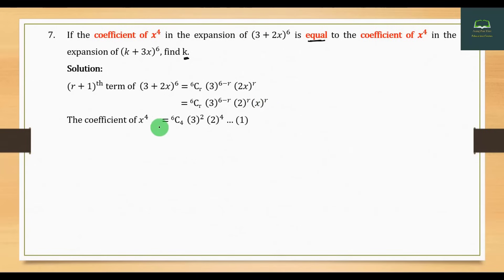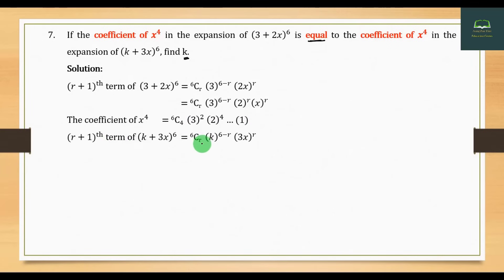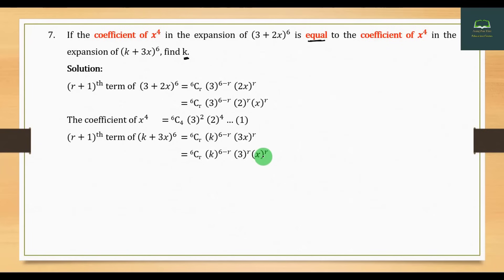The coefficient is given by the formula: 6C4 times 3^(6-4) times 2^4. Using the general term formula, the r-th term is nCr times (first term)^(n-r) times (second term)^r, so T(r+1) = 6Cr times 3^(6-r) times 2^r.